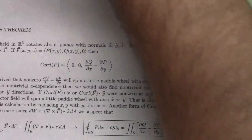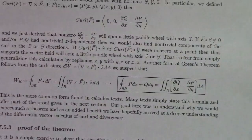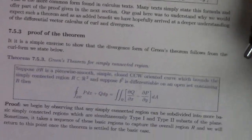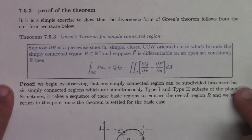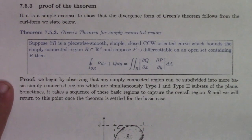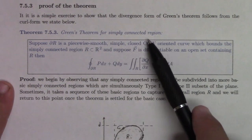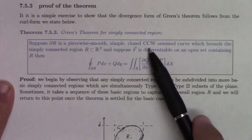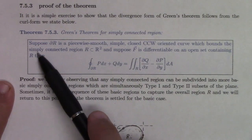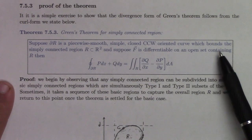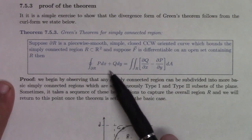So here's Green's Theorem for a simply connected region. Suppose the boundary of R is a piecewise smooth, simple, closed, counterclockwise-oriented curve bounding a simply connected region R, a subset of R². Suppose F is differentiable on an open set containing R — then we have this result.